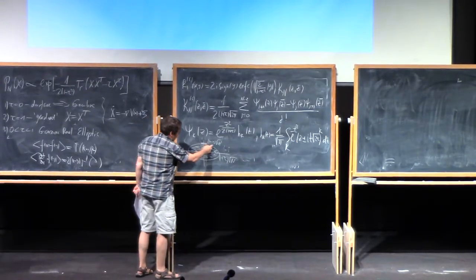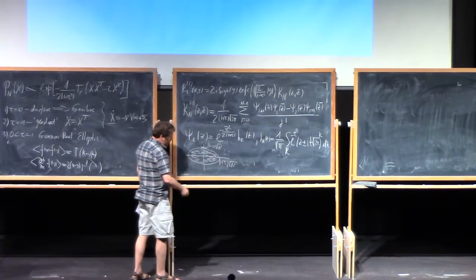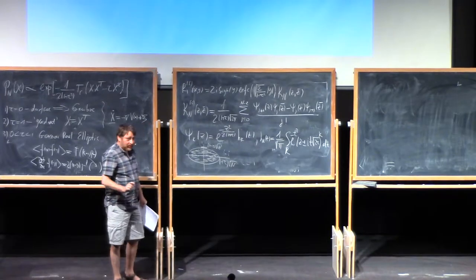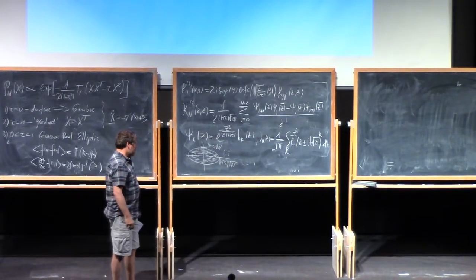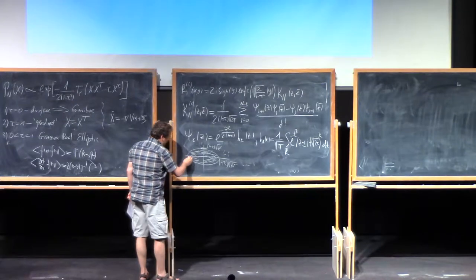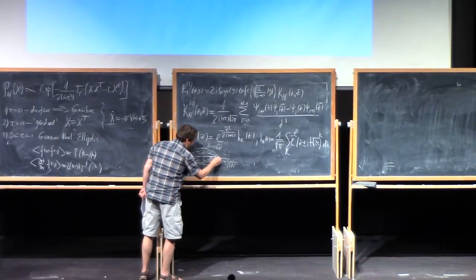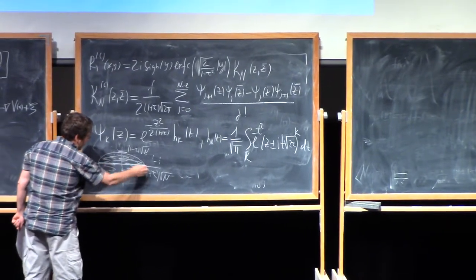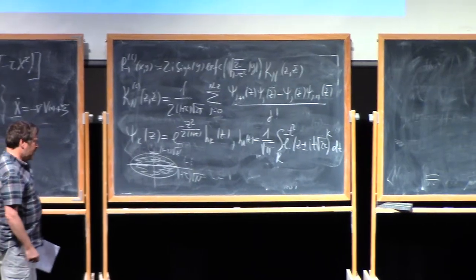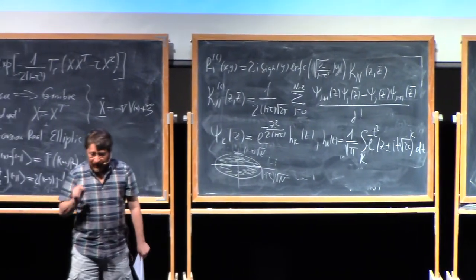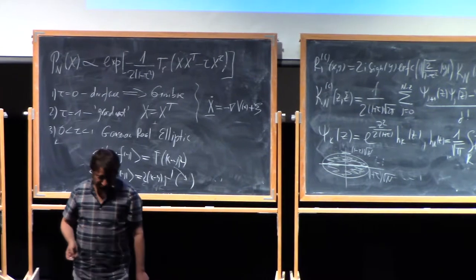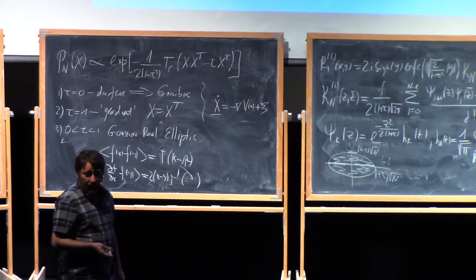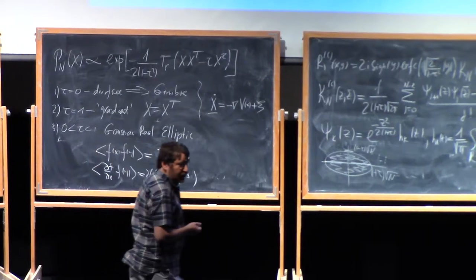Otherwise, there is a gradual process of transforming this. So one can guess that when 1 minus tau becomes of the order of 1 over square root of n, there is a non-trivial crossover regime, but I'm not going to discuss it now. And one also can find that the density of real eigenvalues is uniform and depends on tau, but uniform here, and for any fixed tau not equal to 1, the number of real eigenvalues is of order of square root of n, whereas the number of complex eigenvalues is of order of n.